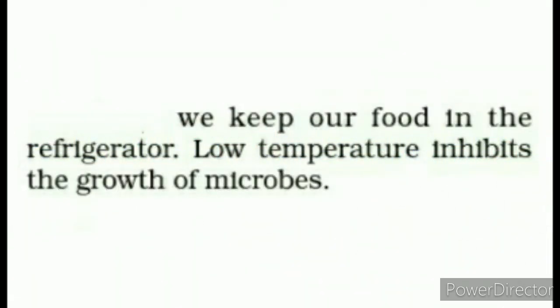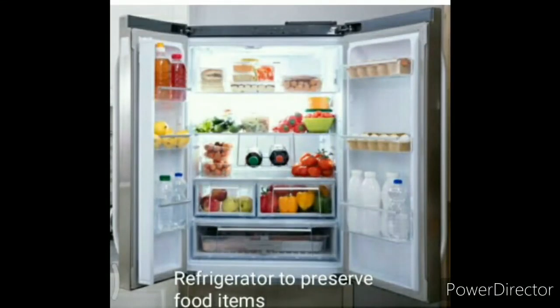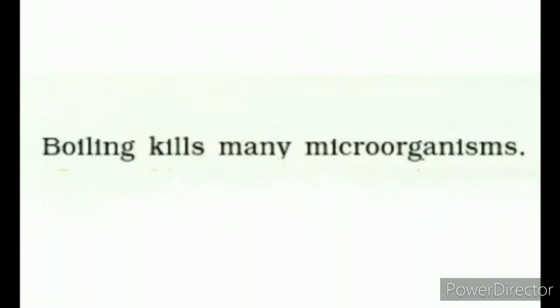The fifth method is heat and cold treatments. We keep our food in the refrigerator — low temperature inhibits the growth of microbes. जैसा कि इस picture में आप देख सकते हैं, इसमें एक refrigerator दिखाया गया है। Fridge के अंदर temperature low होता है जिसकी वजह से कोई भी food item उसमें लंबे समय तक सुरक्षित रहता है।